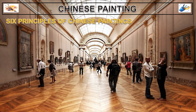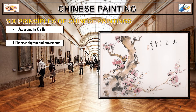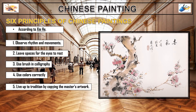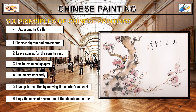For Chinese painting, we have the six principles according to Xie. The first is to observe the rhythm and movement. The second is to leave spaces for the eyes to rest. The third is to use the brush for calligraphy. The fourth is to use colors correctly. The fifth is to live up to tradition by copying the master's artwork. The sixth is to copy the correct proportion of objects and nature.